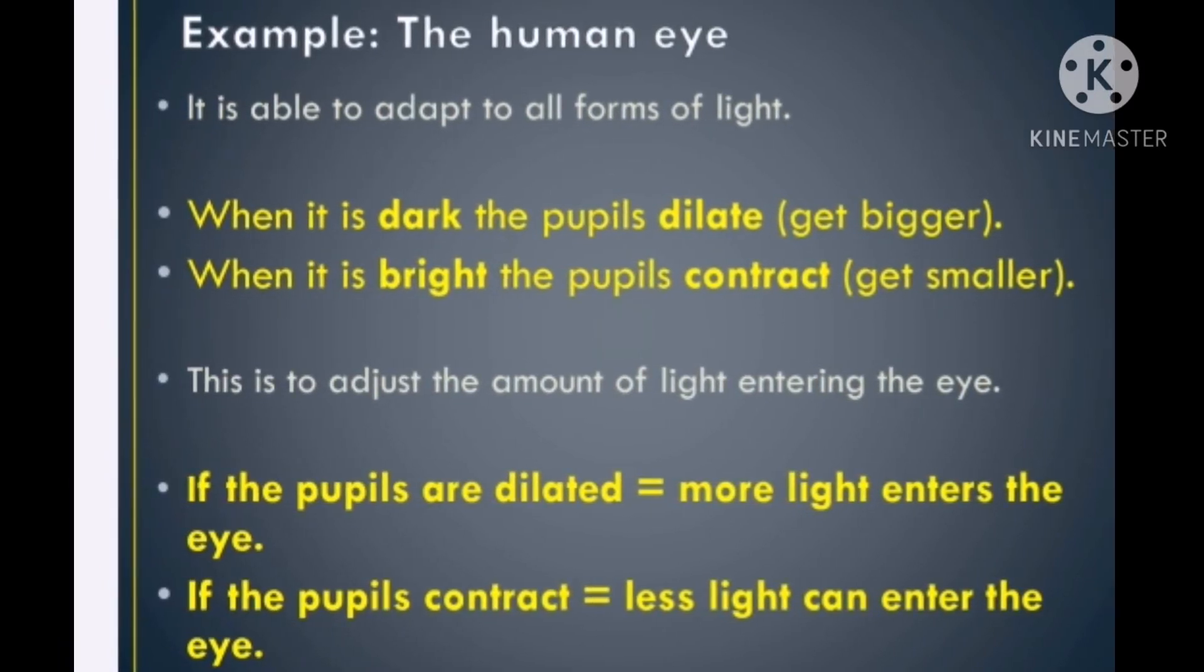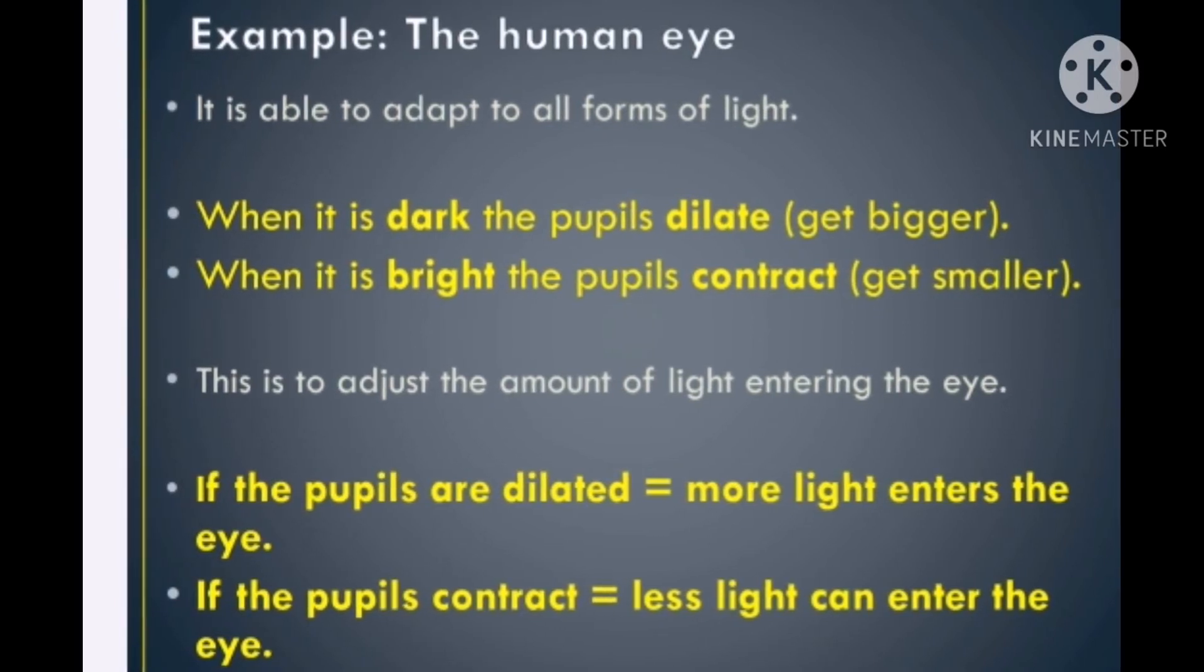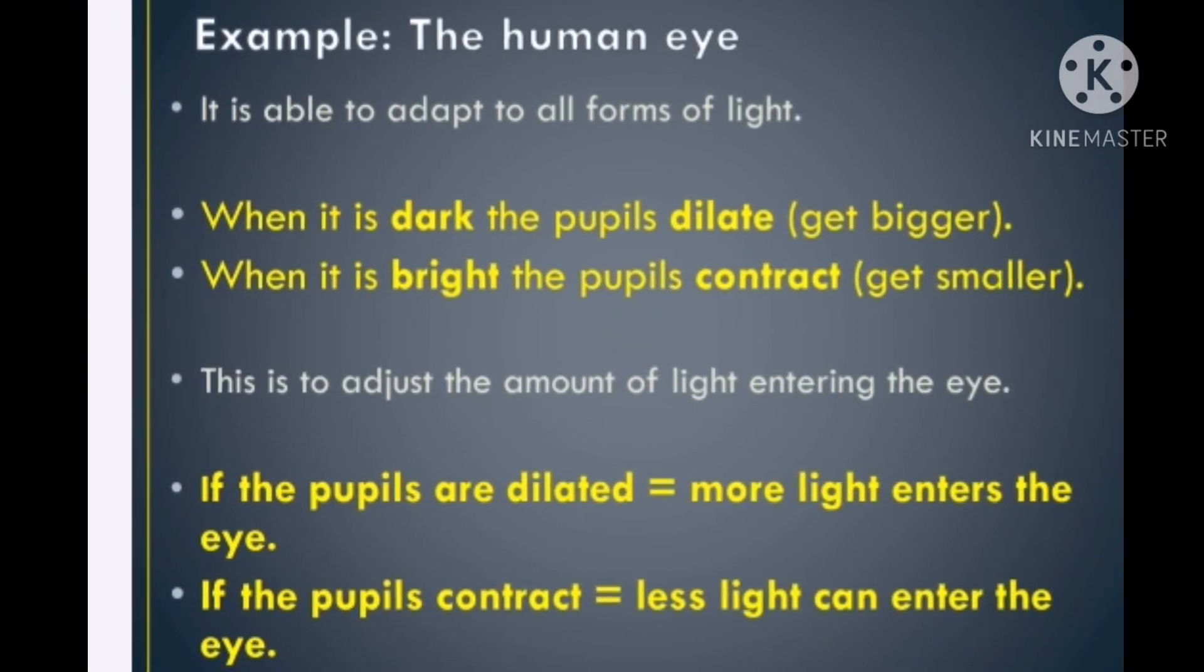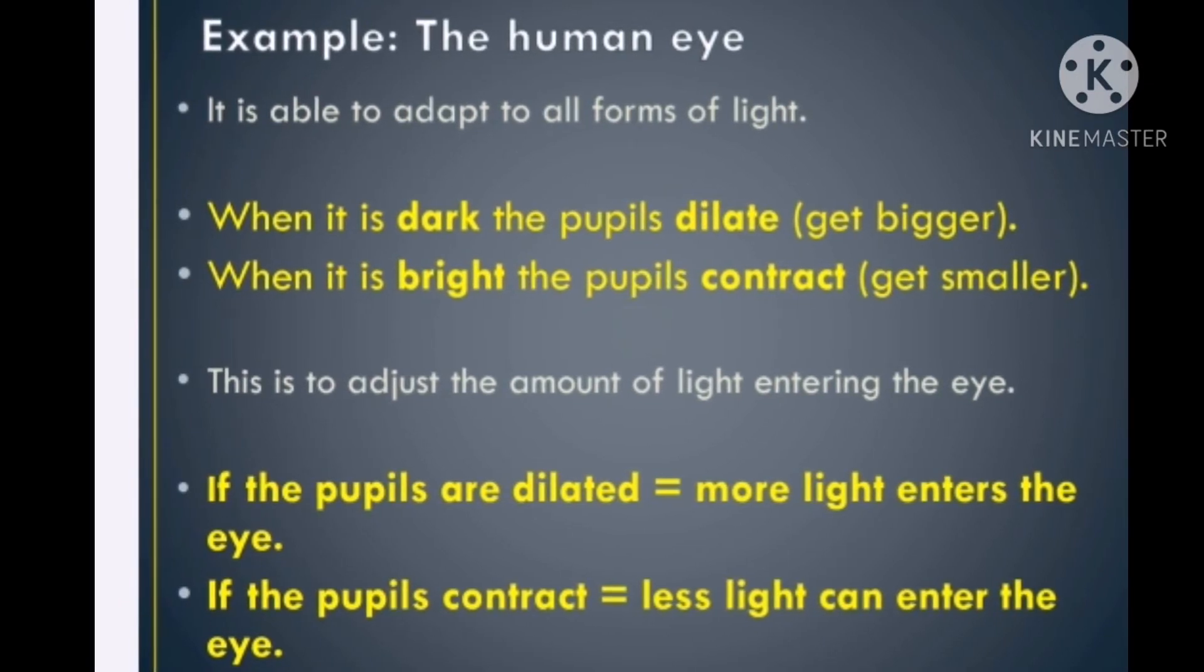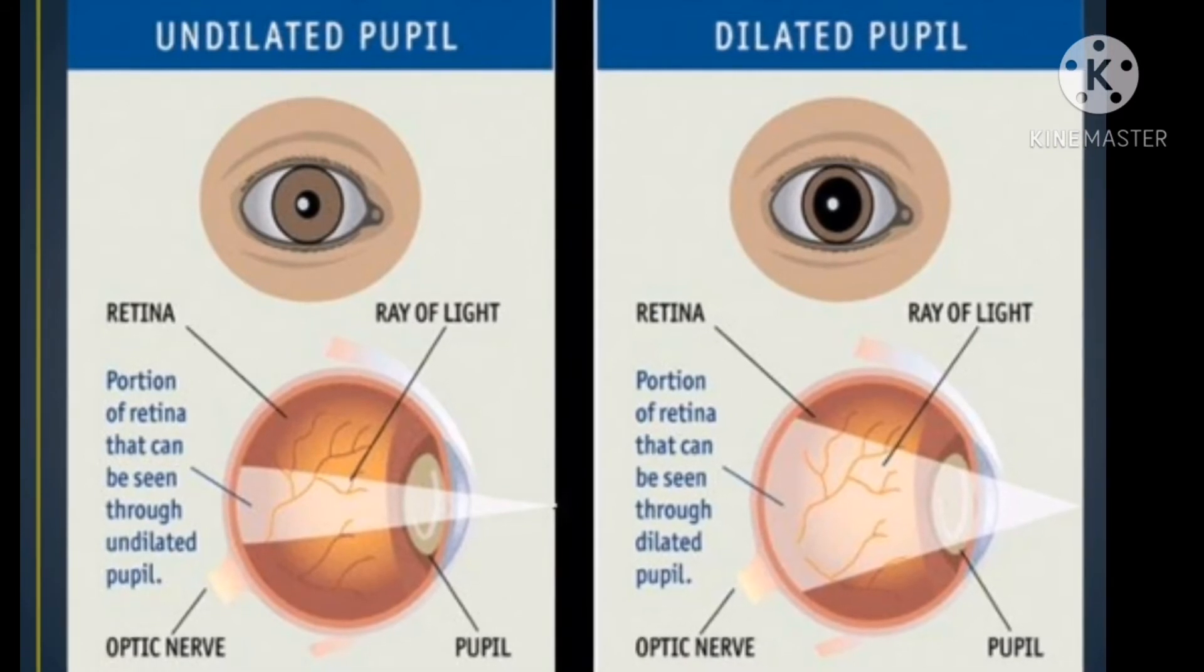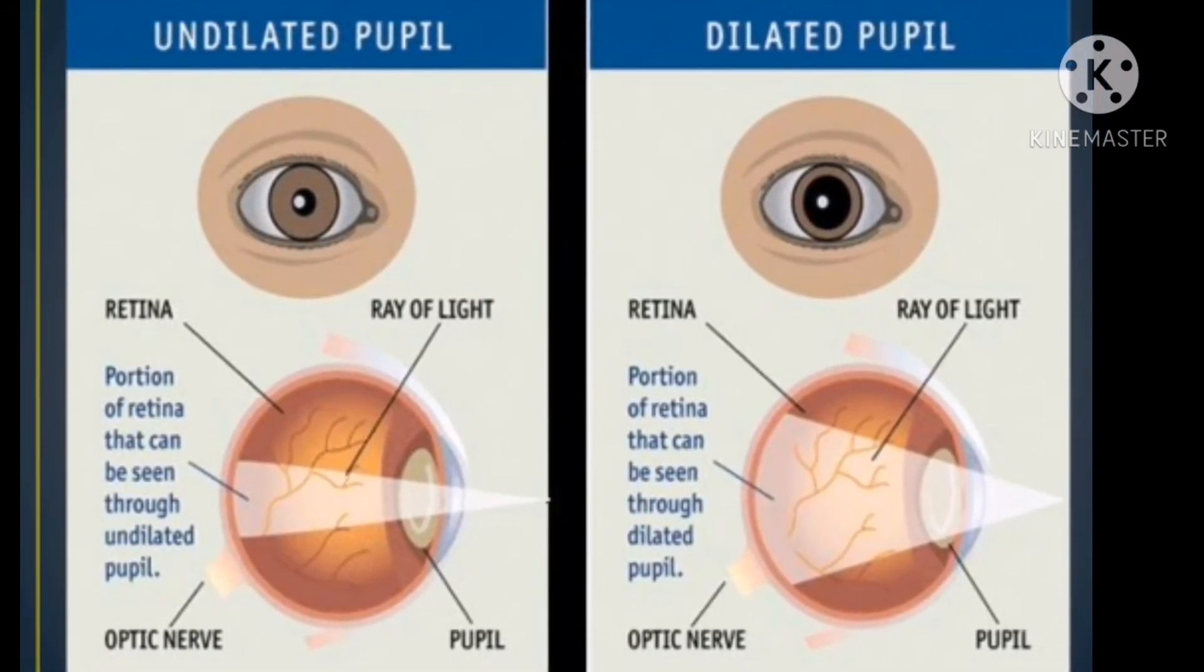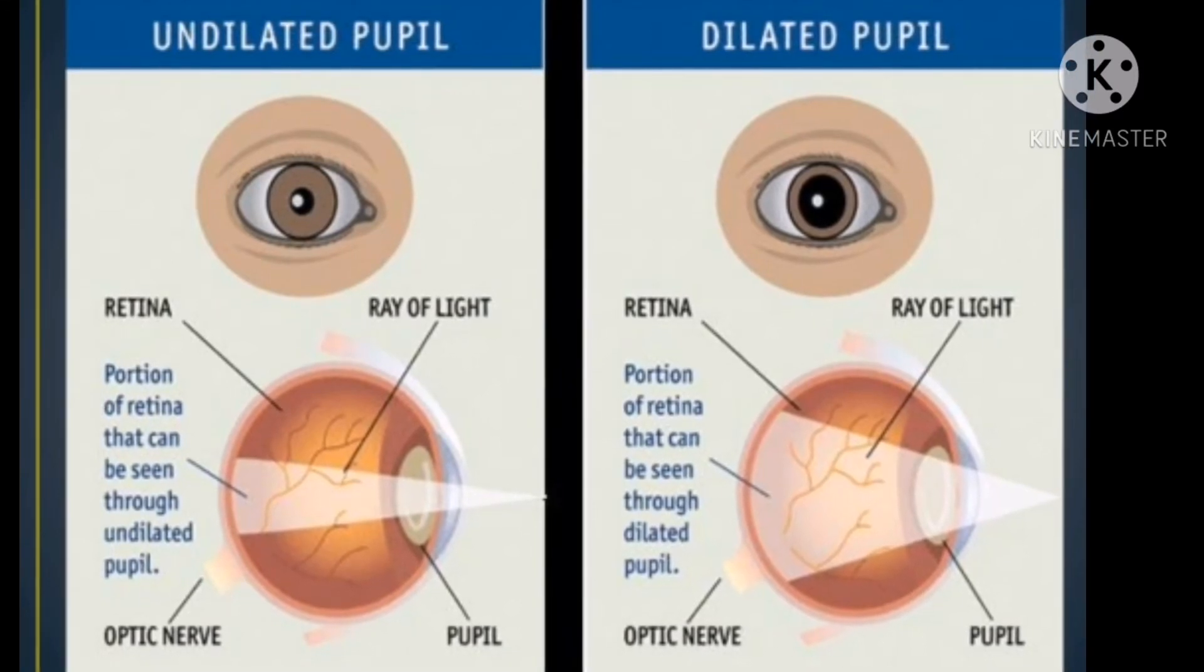If the pupils are dilated, it means more light enters the eye. And if the pupils contract, less light can enter the eye. You can see that in the picture as well. Undilated pupil, less light. Dilated pupil, more light.